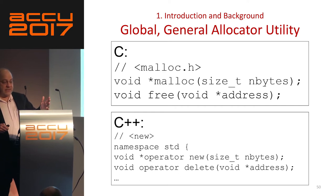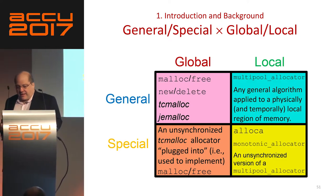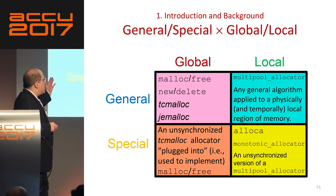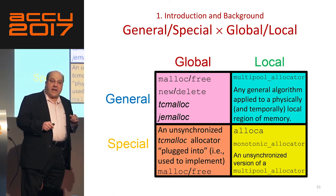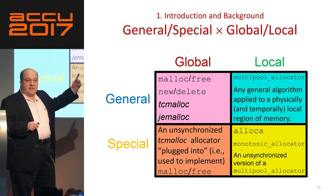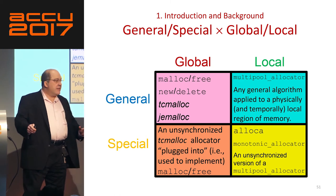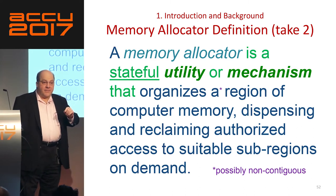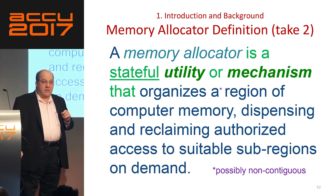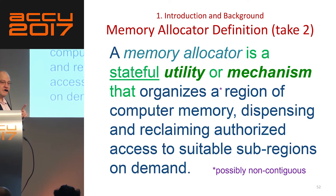So in C++, we have malloc, and in C++ we have new. We can have a global general-purpose allocator like malloc, or we can have a local special-purpose allocator like alloca, and we can have things on either side. A memory allocator is a stateful utility or mechanism. 'Mechanism' is my word for an instantiable object that does not try to represent a value.